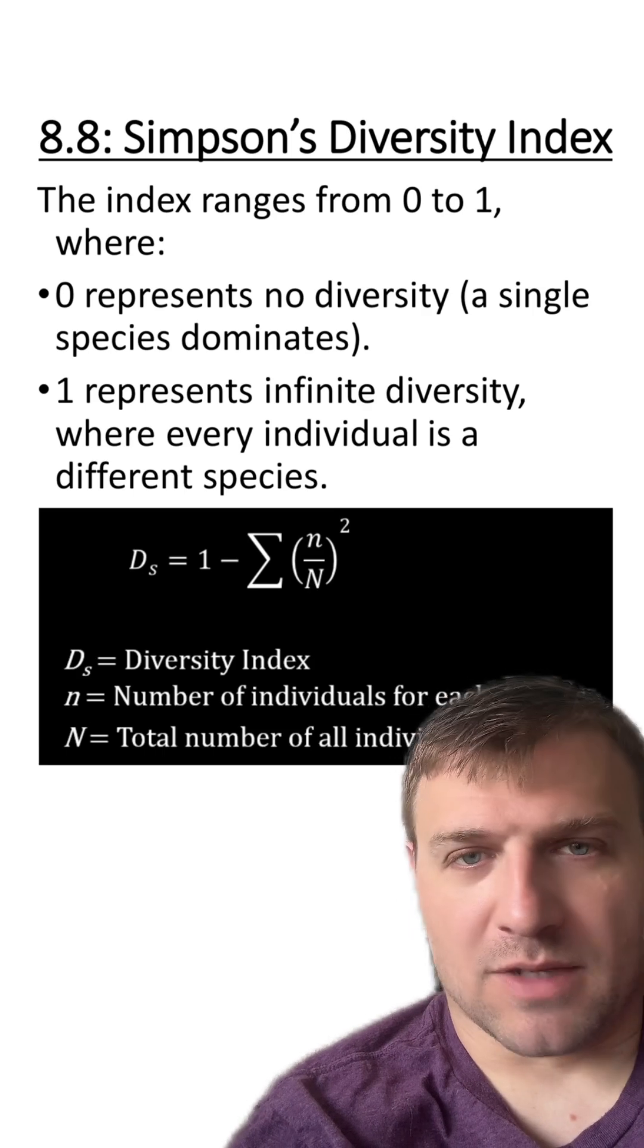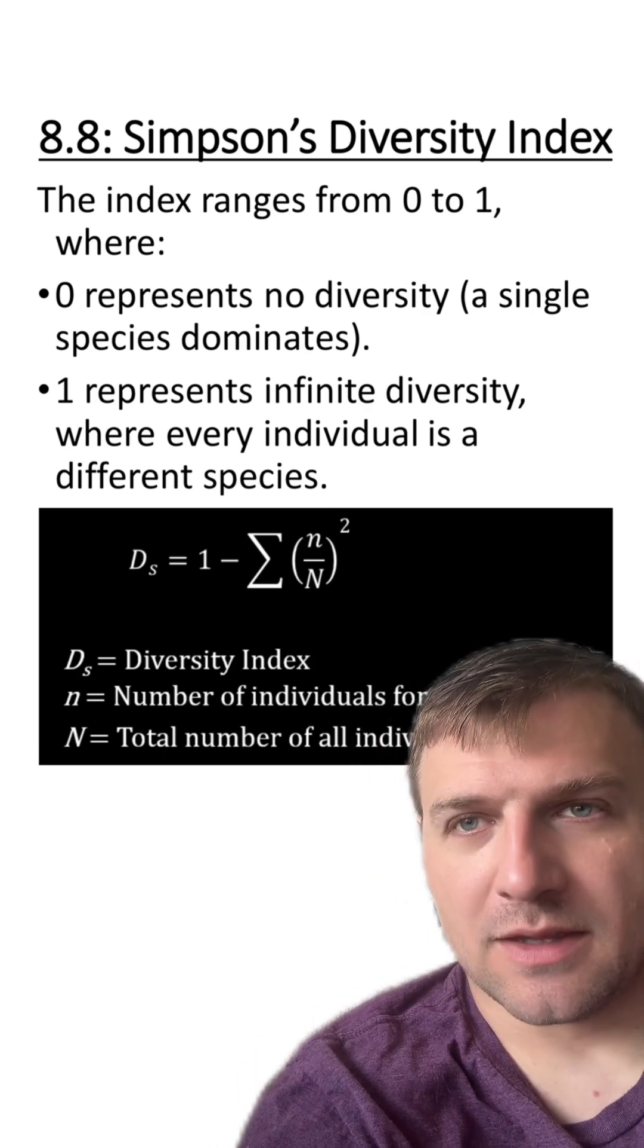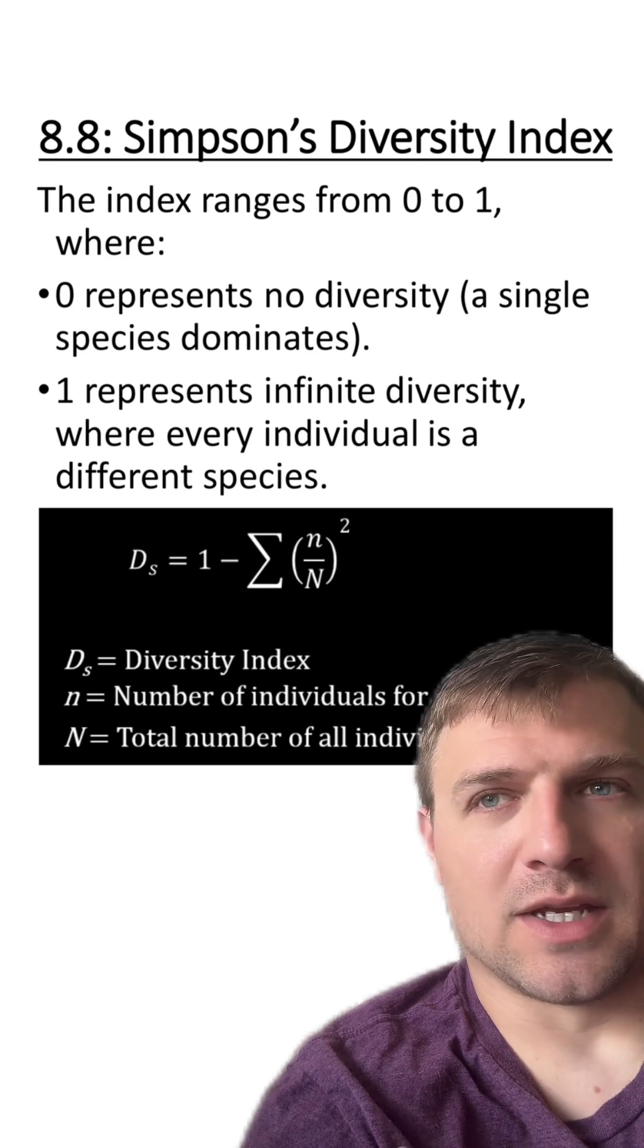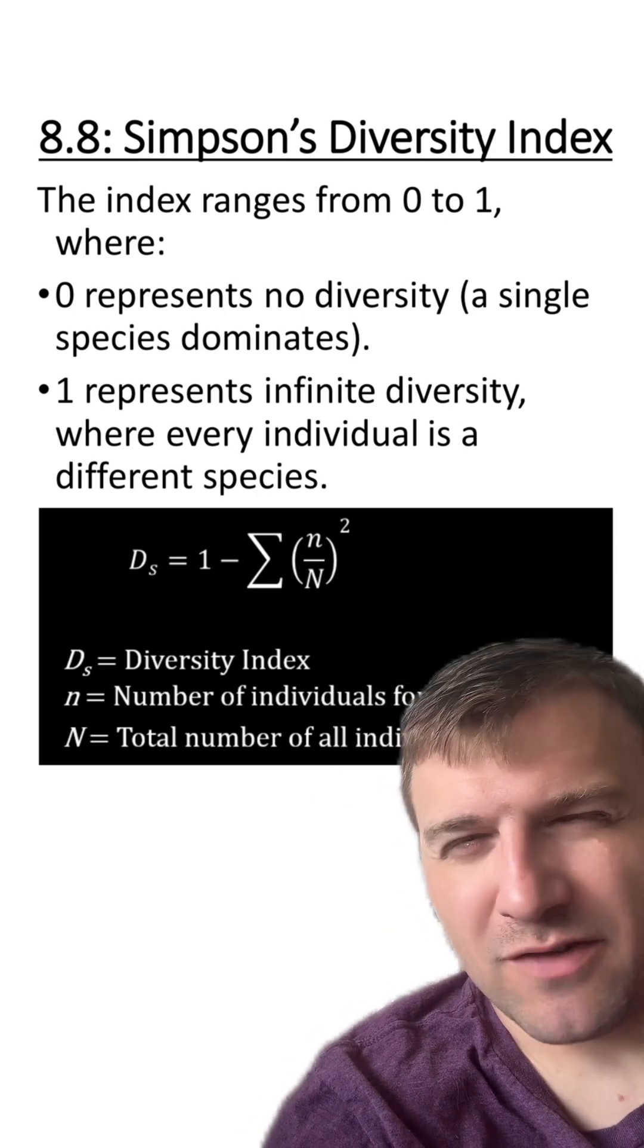What does that number mean? Remember that the biodiversity index ranges from zero to one, one being the largest amount of diversity and zero being no diversity. So a diversity of 0.664 is moderately diverse.